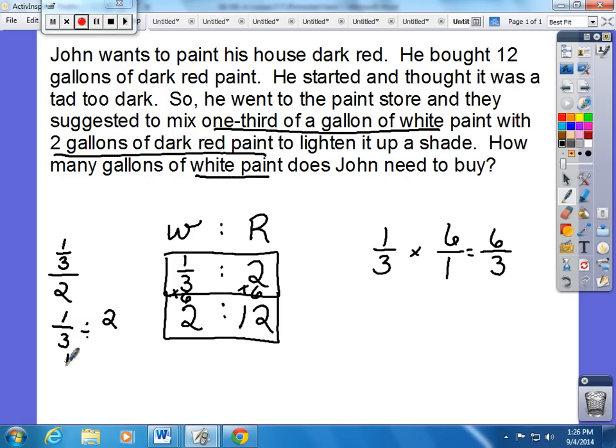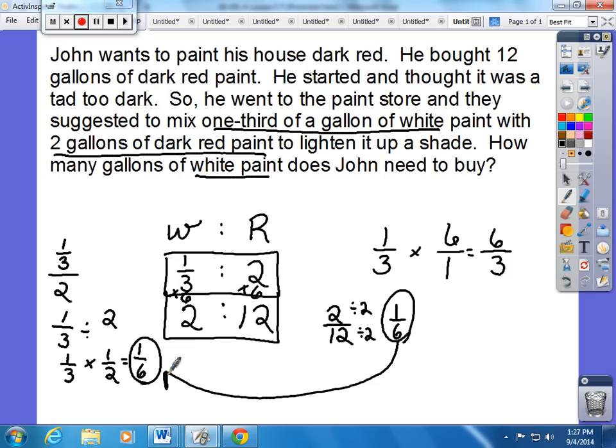You can keep the first fraction, change division to multiplication, and flip the second fraction, which we'll learn later. But the value of the first one is one sixth. Now the second one, if I make that into a fraction or a ratio, and simplify because they're both divisible by two, I get one sixth as well. So I know the value of the ratio is one sixth, and it helped me to solve this problem.